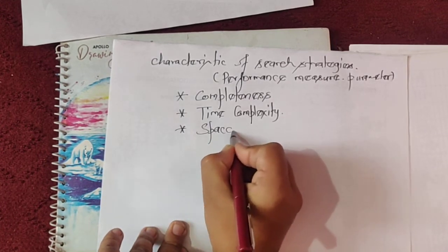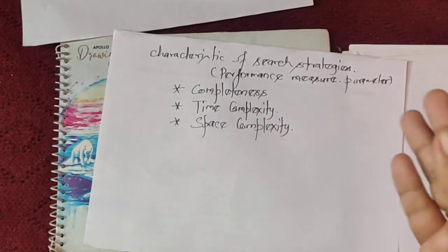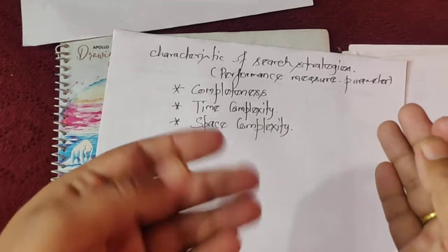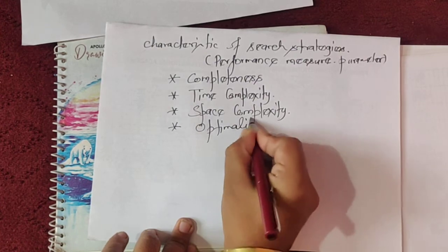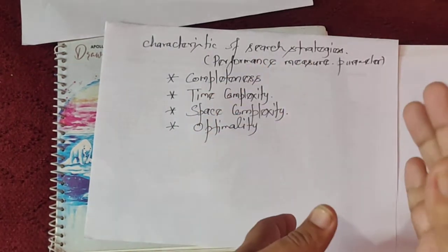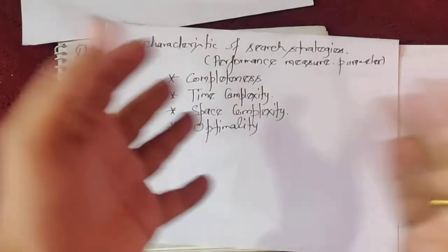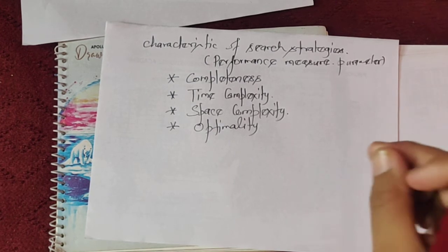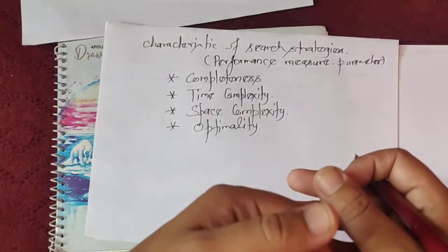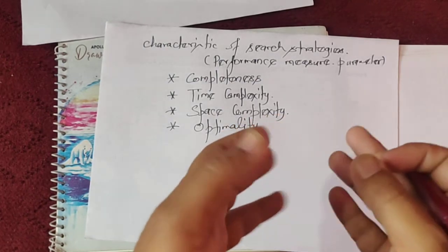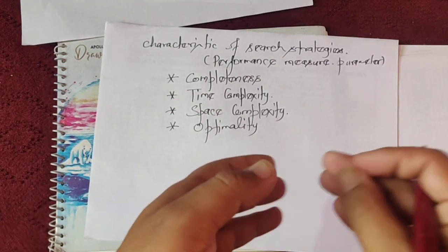The third parameter is space complexity — the total space or memory used by the searching strategy while solving the problem. The fourth is optimality — does it guarantee the optimal solution, meaning the least-cost solution? There may be many solutions, but we need the optimal one. In the next video, we will continue with searching strategies, covering informed and uninformed search.